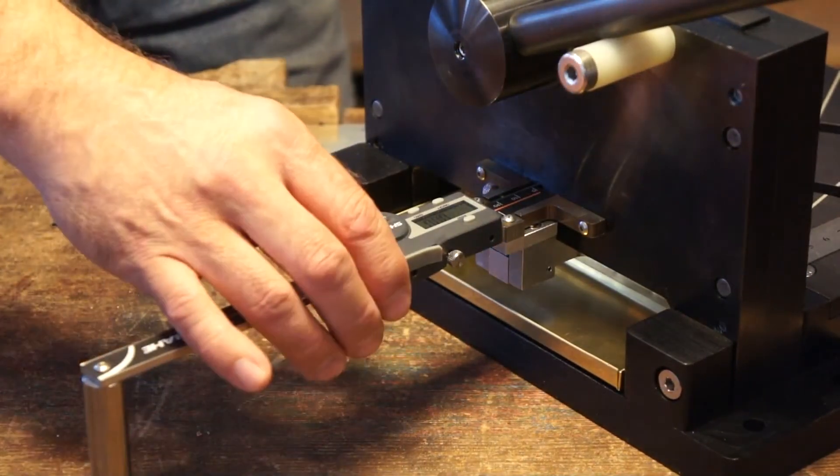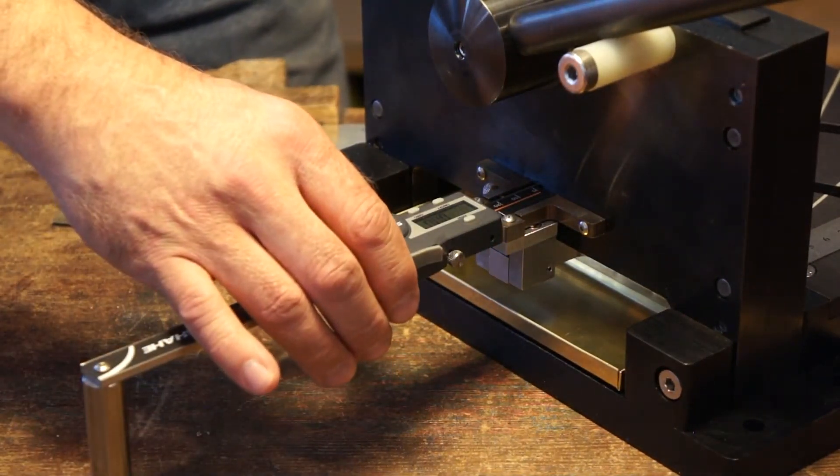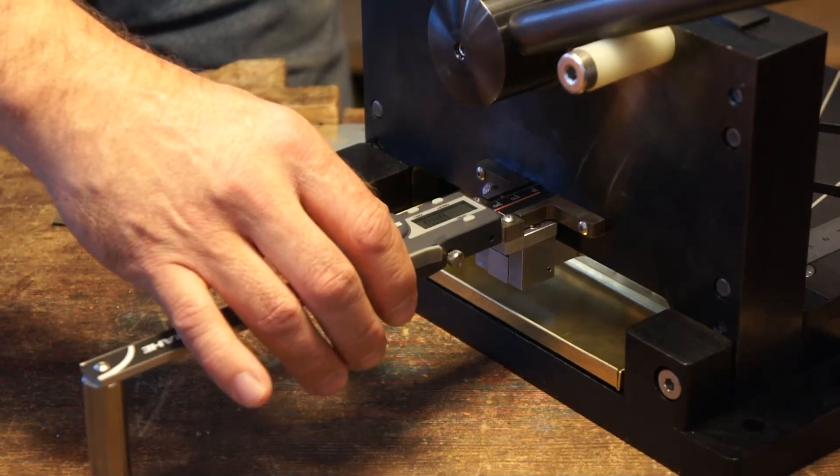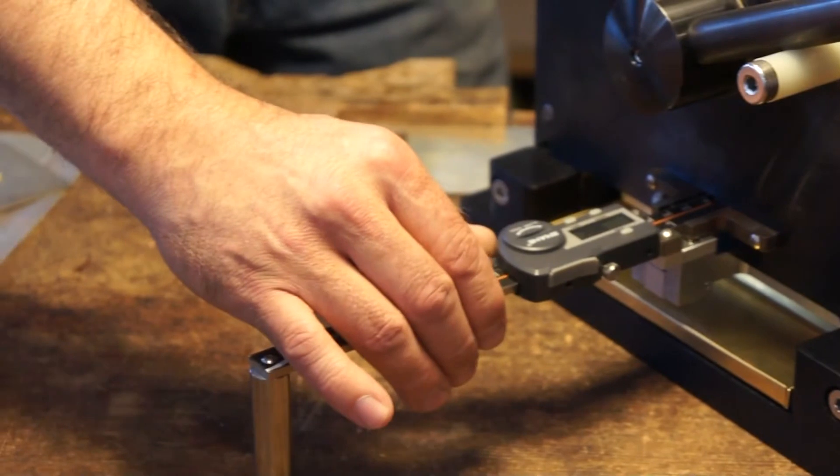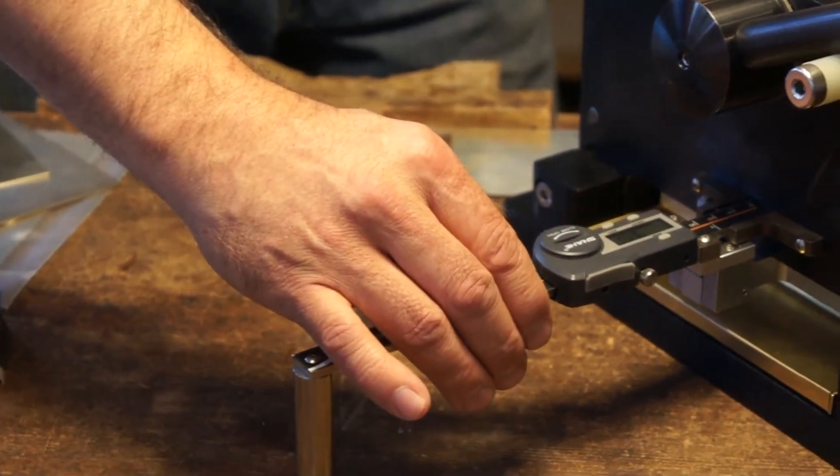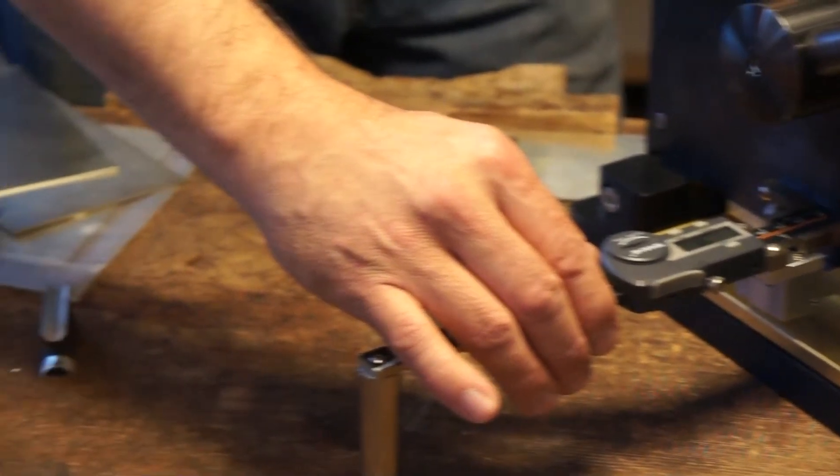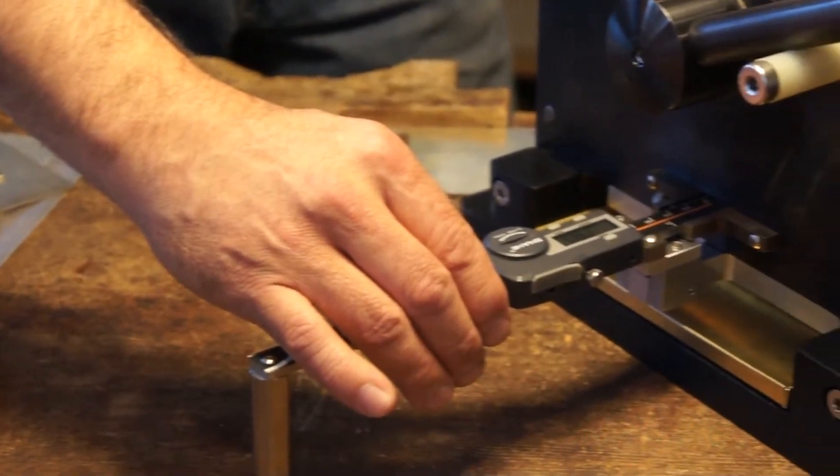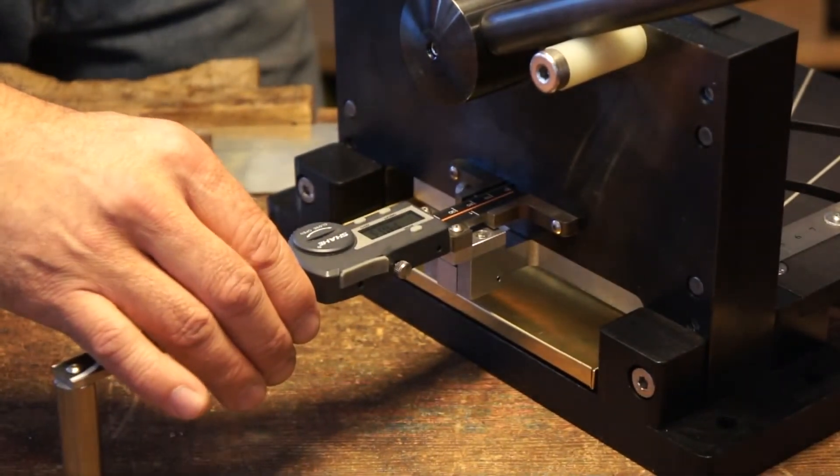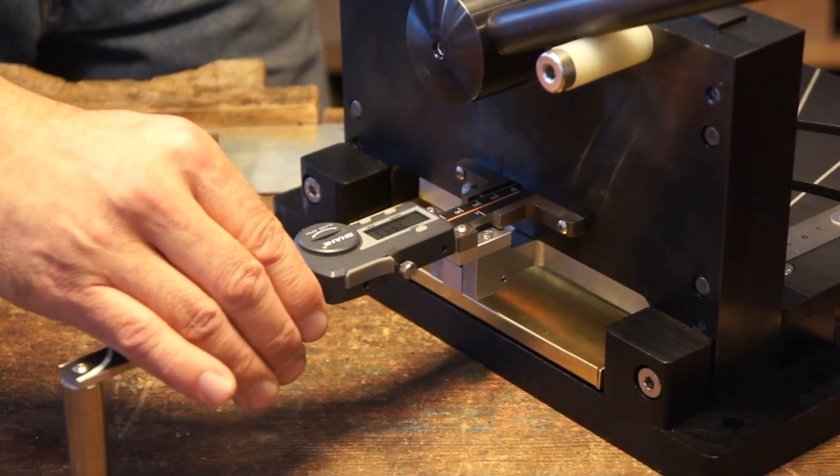So I'm going to make a depth of cut first off of, let's see, I'm going to pull this back. I want the depth of cut to 14. Set that exactly where I want.